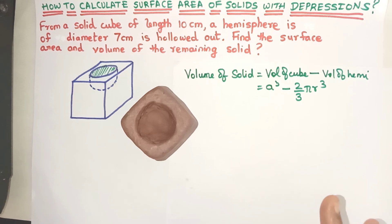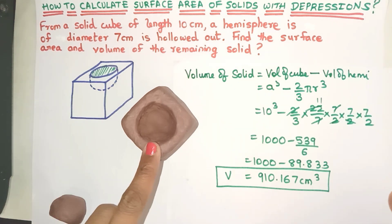So friends, the volume of the remaining solid comes out to be 910.167 centimeter cube. Please check out the calculations.